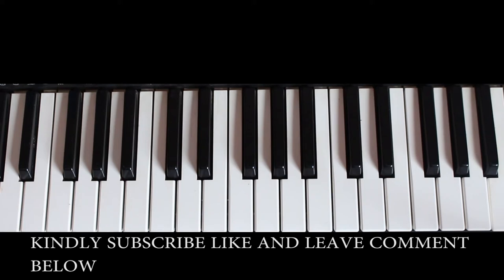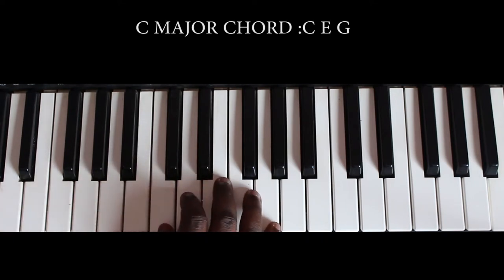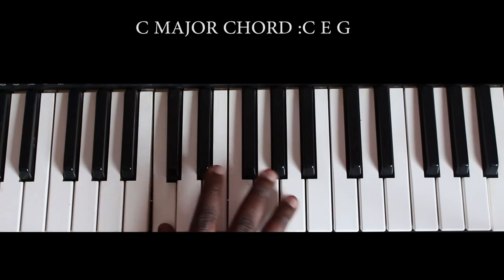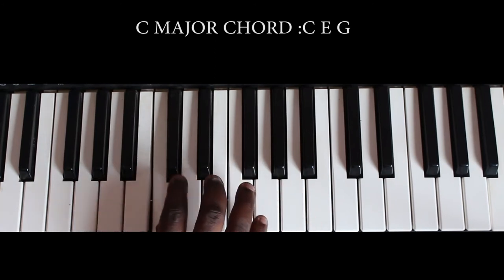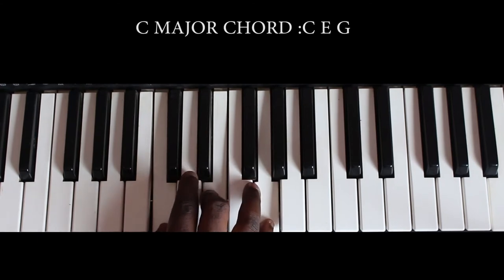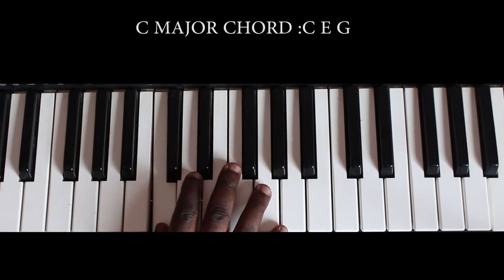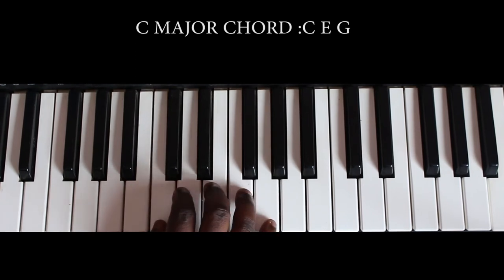The C major chord is made up of the C, the E, and the G. That is our C here, our E and our G. C, E and G — so this is the C major chord.